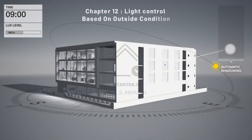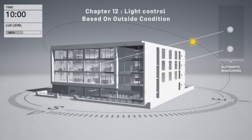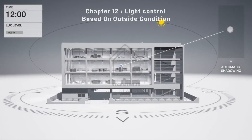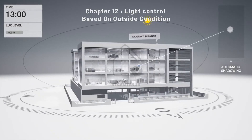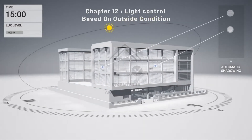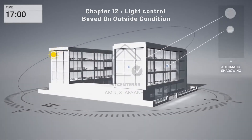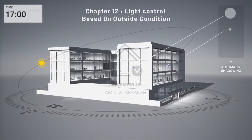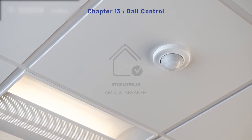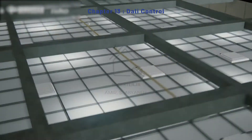The next topic in light control is open loop systems, where we use weather station information to control indoor lighting or blinds. This is also very interesting and we are going to learn how to program it in ETS and implement it in a project.